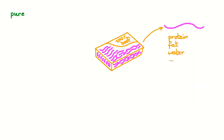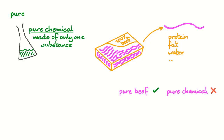But chemists use the word pure to mean something more specific. Beef is made up of proteins, fats, water, and many other substances. It's still pure beef, but it's not a pure substance, because it's made of many different substances. So to a chemist, a sample is a pure chemical if it contains only one substance. There's nothing wrong with calling beef pure beef, but if you've got your chemist hat on, you need to be thinking of the chemical version of purity.